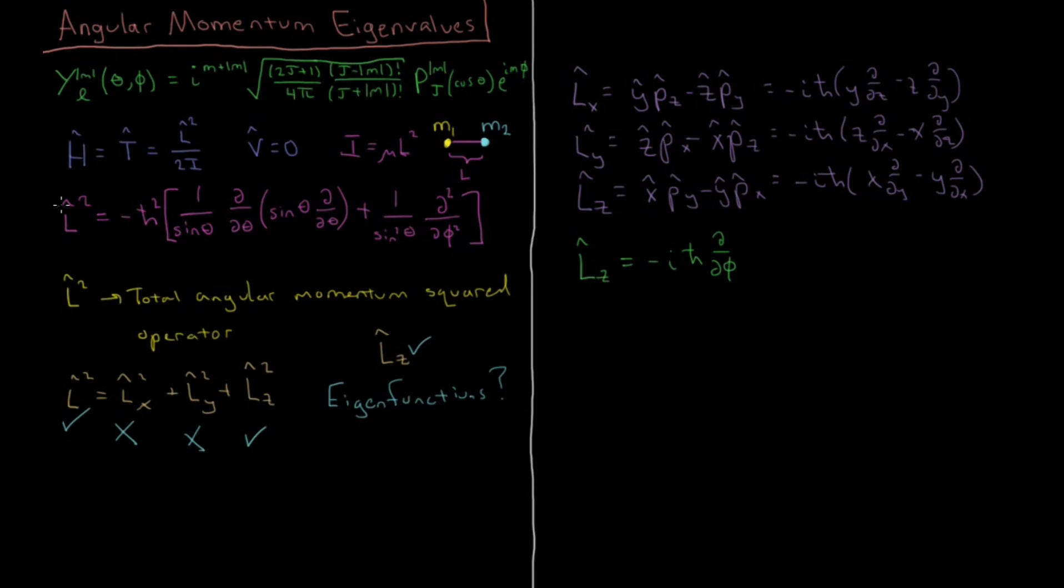So now that we've discussed what the explicit form of these operators are, hopefully if you have some exam with these, you at least are given a formula sheet which contains L squared. L squared is very complicated, and even I don't remember it offhand, it's something I have to look up.